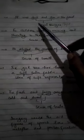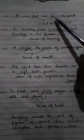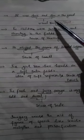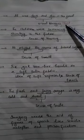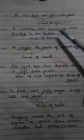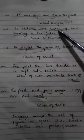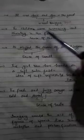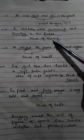Now we explain the types of imagery with examples. 'It was dark and dim in the forest.' Here, two words — dark and dim — represent the sense of sight. 'The children were screaming and shouting in the fields.' Here, two words — screaming and shouting — represent sense of hearing.